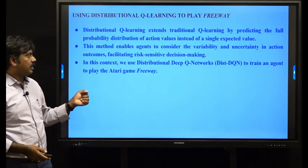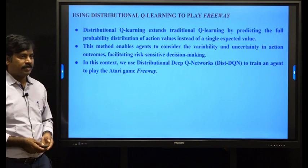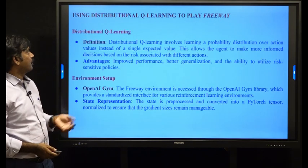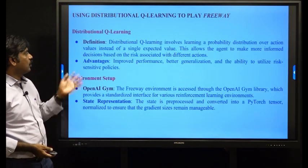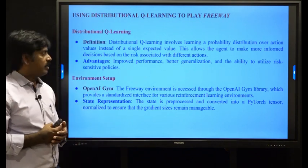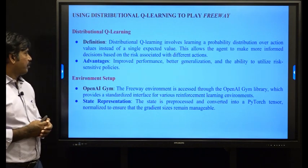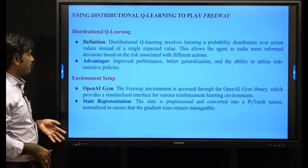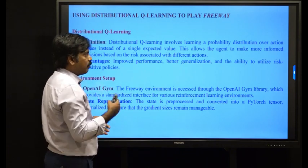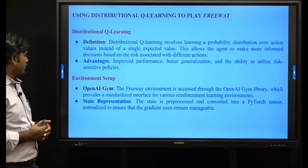In this session, we apply the distributional Q-learning concept to the Atari game to see how well it performs. It produces distributional probability values for rewards in a state-action pair. The advantages include improved performance, better generalization, and the ability to utilize risk-sensitive policies compared with traditional systems.